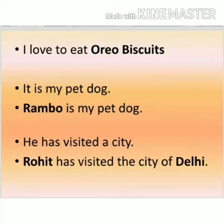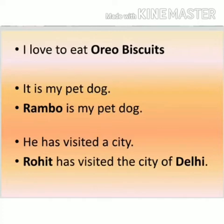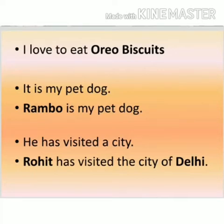Now if I say: it is my pet dog — which dog? There are so many dogs around you. Which dog am I talking about? If we give a special name to that animal, you can easily identify which dog I am talking about. If I say: Rambo is my pet dog — now you know the name of the dog is Rambo, and Rambo will start with a capital letter because it is a special name.